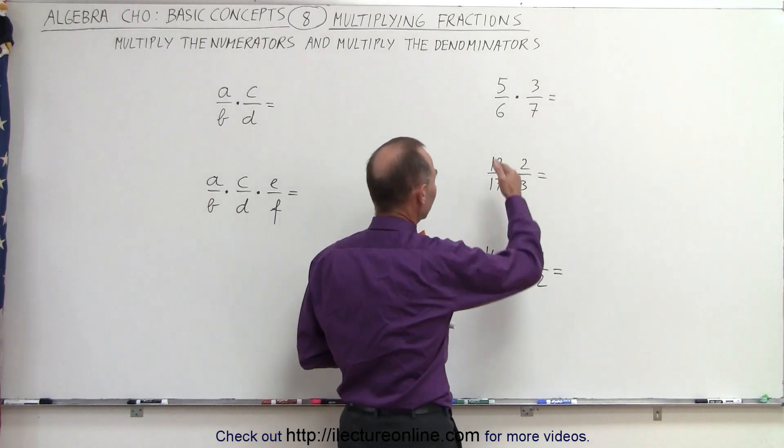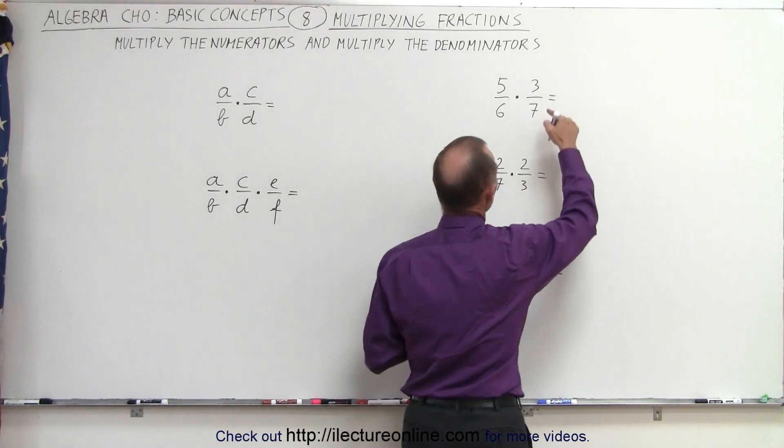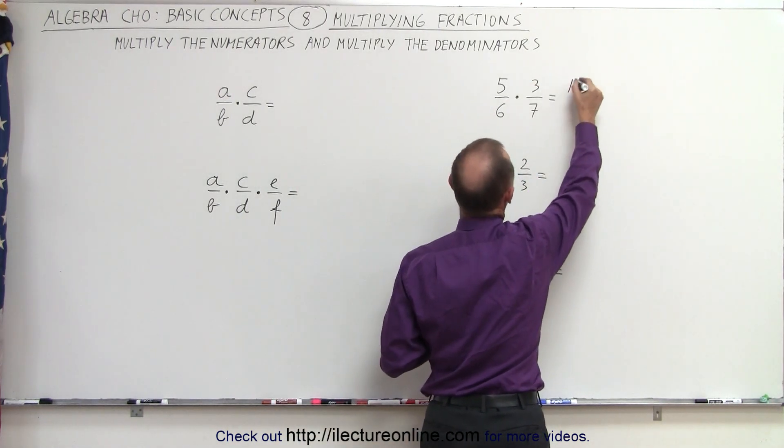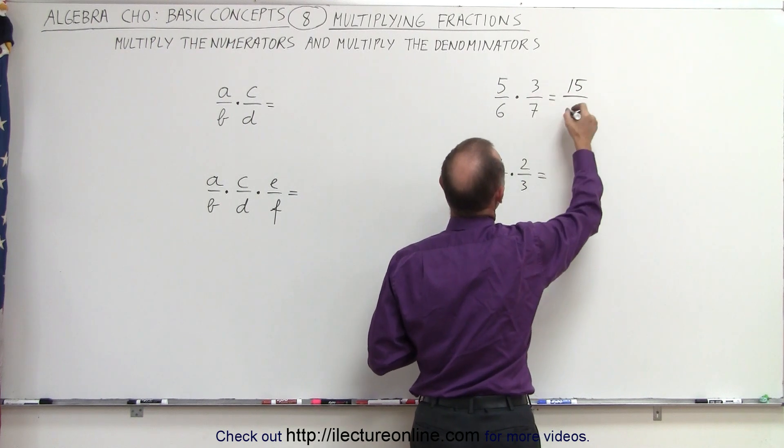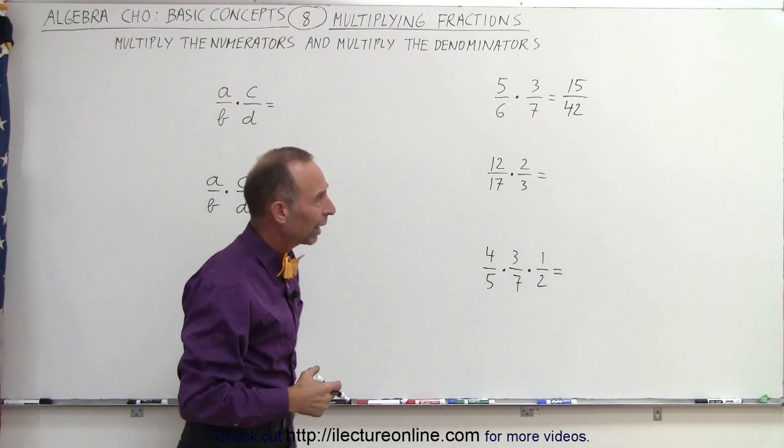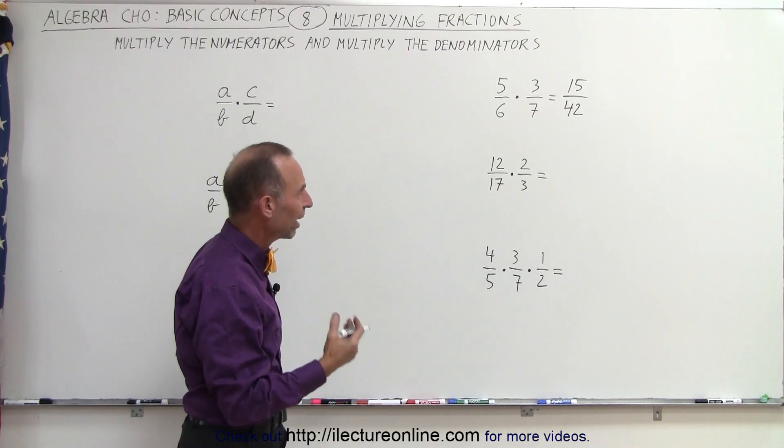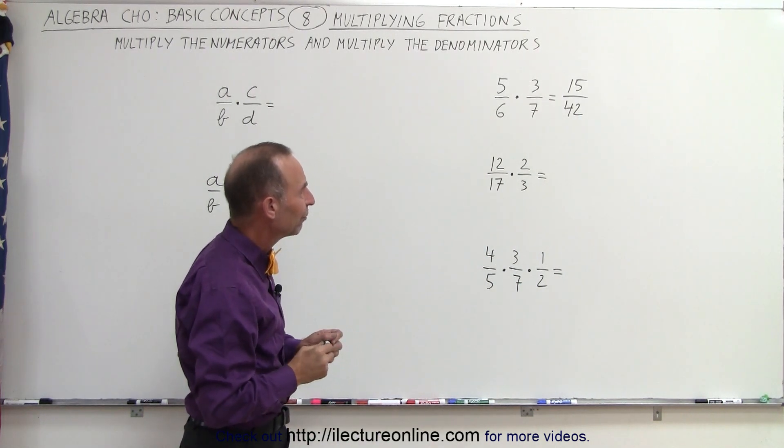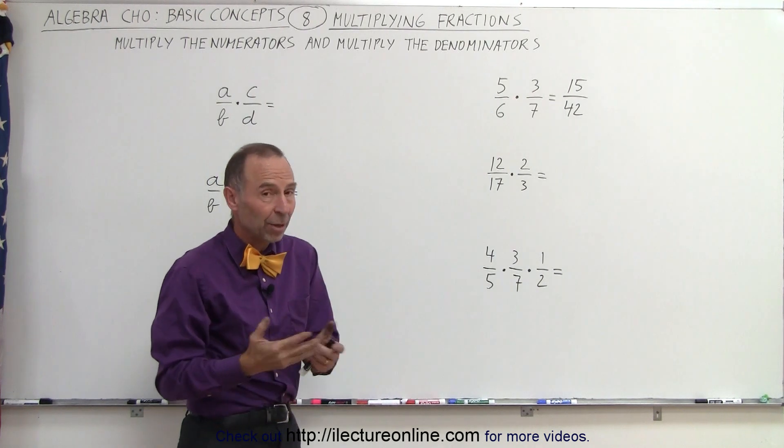We have the fractions 5 over 6 times 3 over 7. So we multiply 3 times 5 gives us 15, and 6 times 7 gives us 42. Of course, when we want to write that as the most reduced fraction, we can divide both the top and the bottom by the same number if possible.